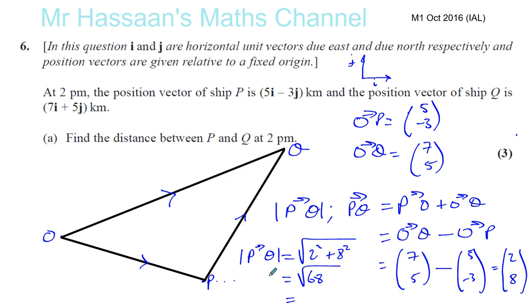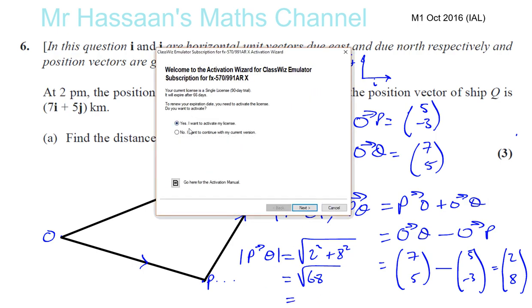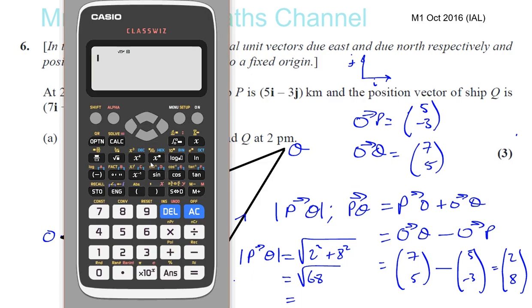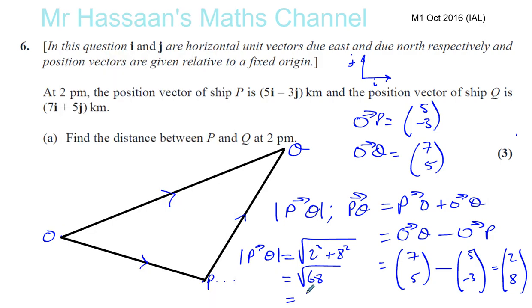Okay, the square root of 68 to 3 significant figures, we should write it to 3SF. So we're going to have the square root of 68 which gives us 2 root 17, which is 8.25, 8.25 kilometers. Okay, that's part A. I'm going to do part B on the next video.